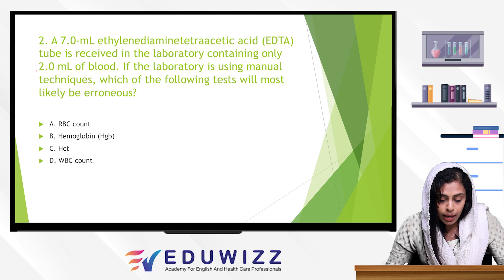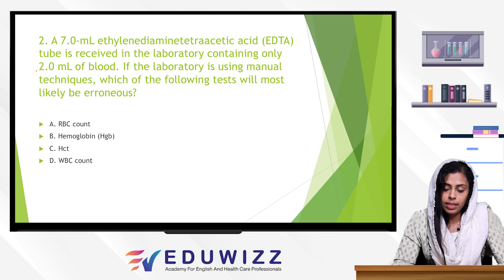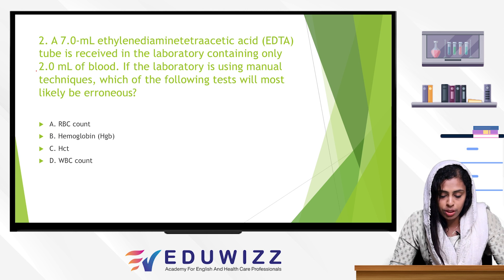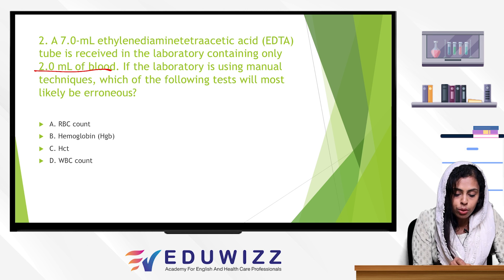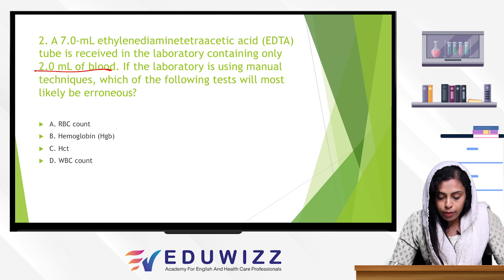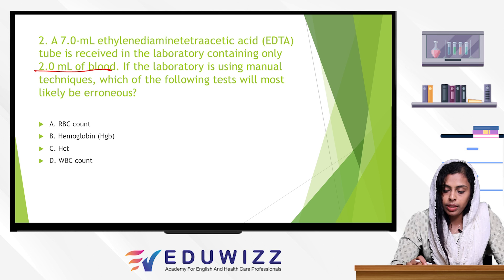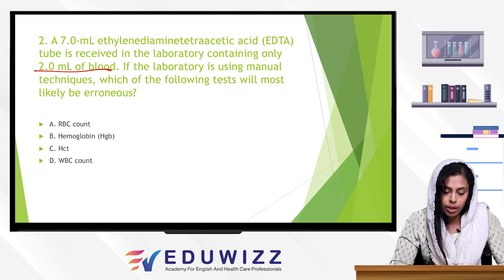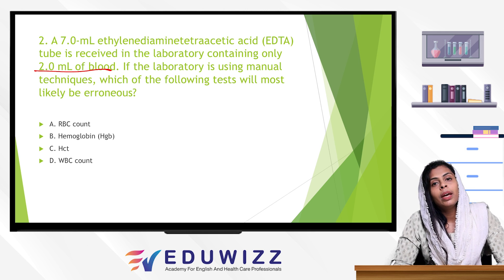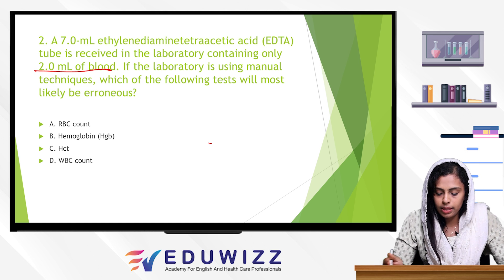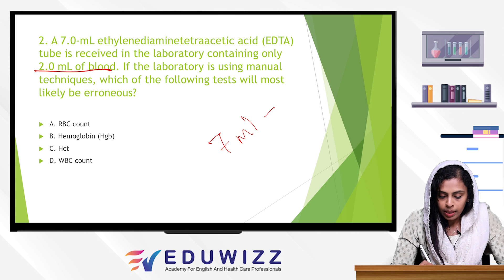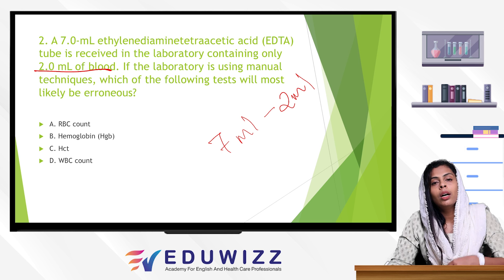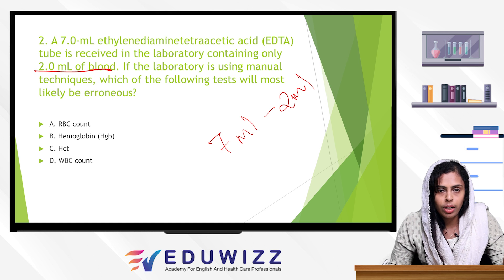The next question: a 7 ml EDTA tube is received in the laboratory containing only 2 ml of blood. There is an anticoagulant excess — 7 ml anticoagulant with only 2 ml of blood — meaning the anticoagulant-to-blood ratio is increased.